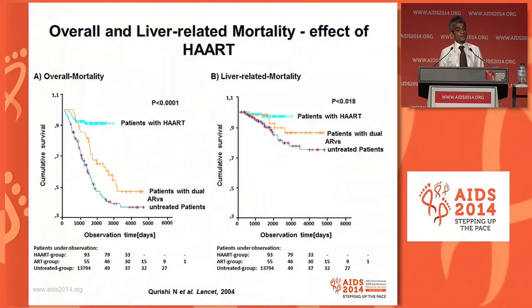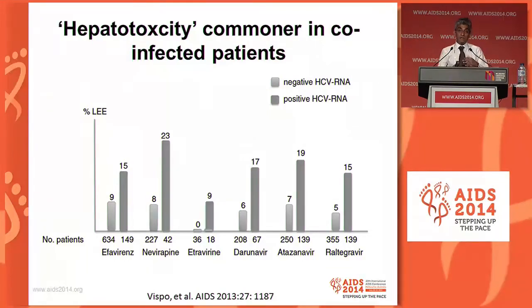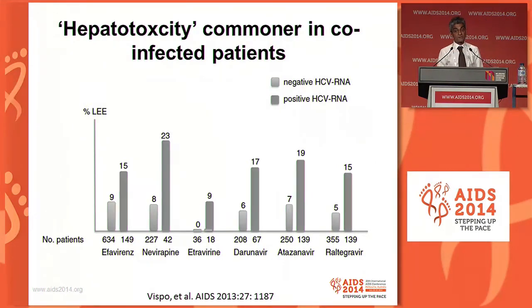From the early days of highly active antiretroviral therapy, we found that getting people onto ART not only reduced overall mortality, but reduced liver-related mortality and morbidity as well. Clearly, ART is good for co-infected patients. Unfortunately, even with modern ART agents — boosted PIs and raltegravir — there is still the risk of hepatotoxicity if co-infected with hepatitis C and HIV. The key issue is to try and cure people's hepatitis C to stop all of these effects.